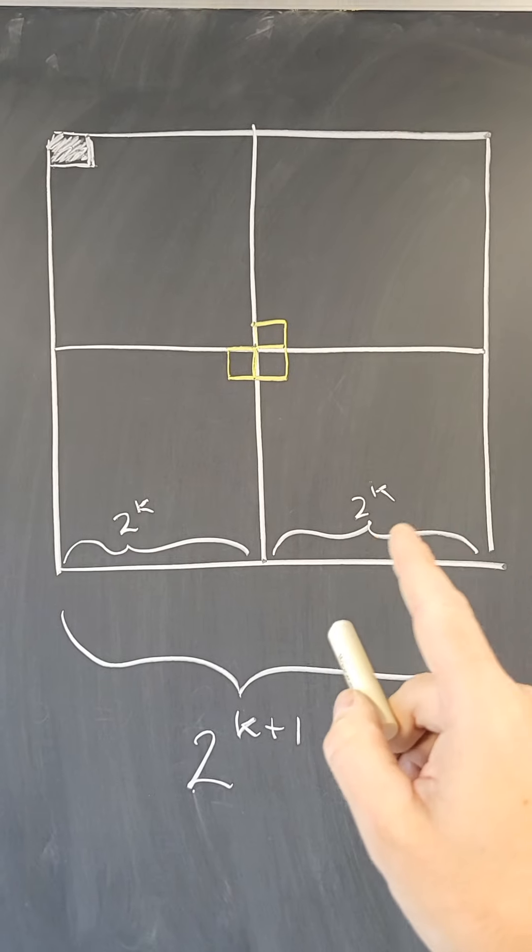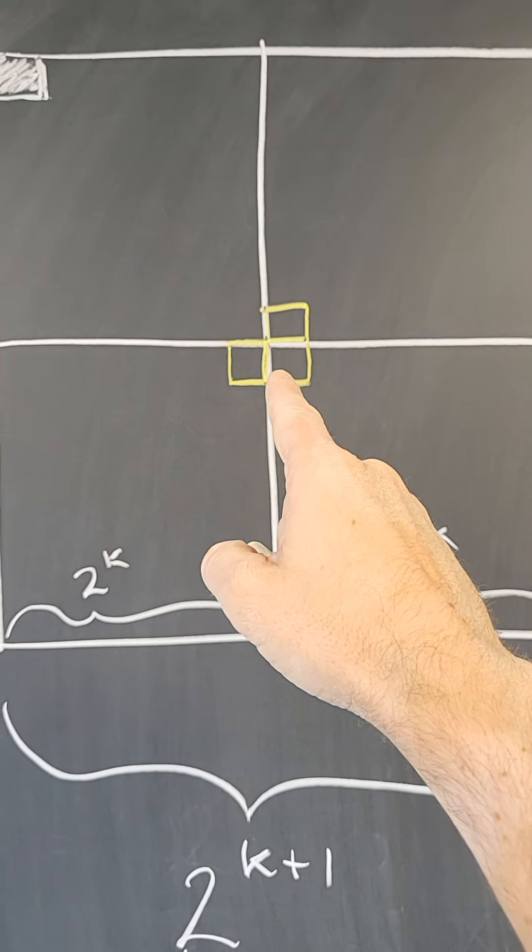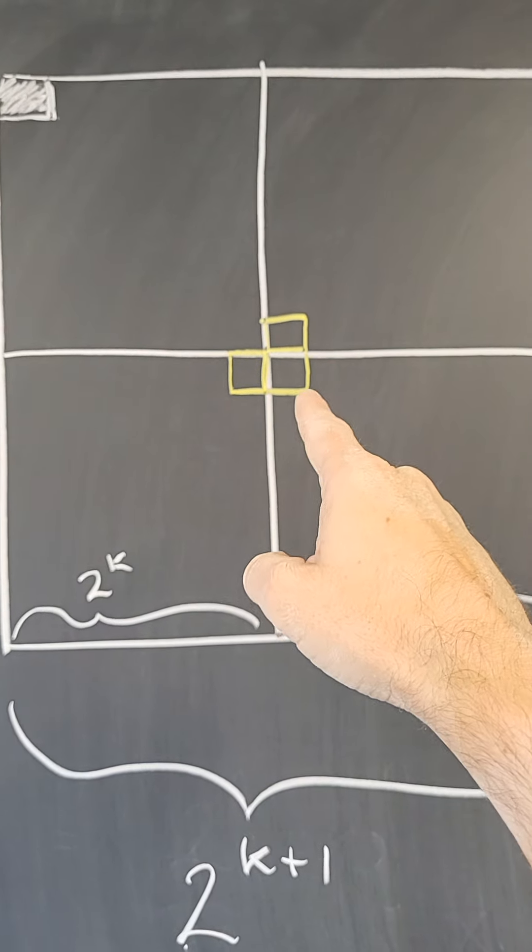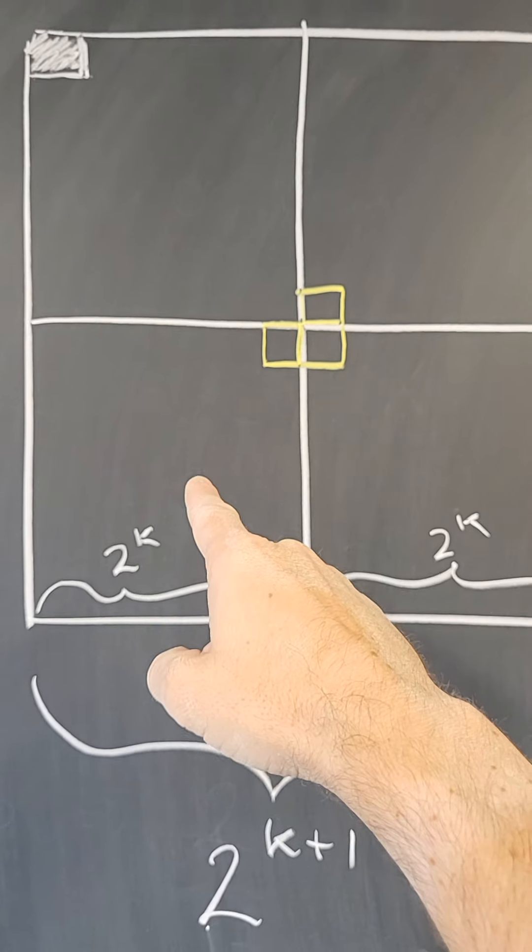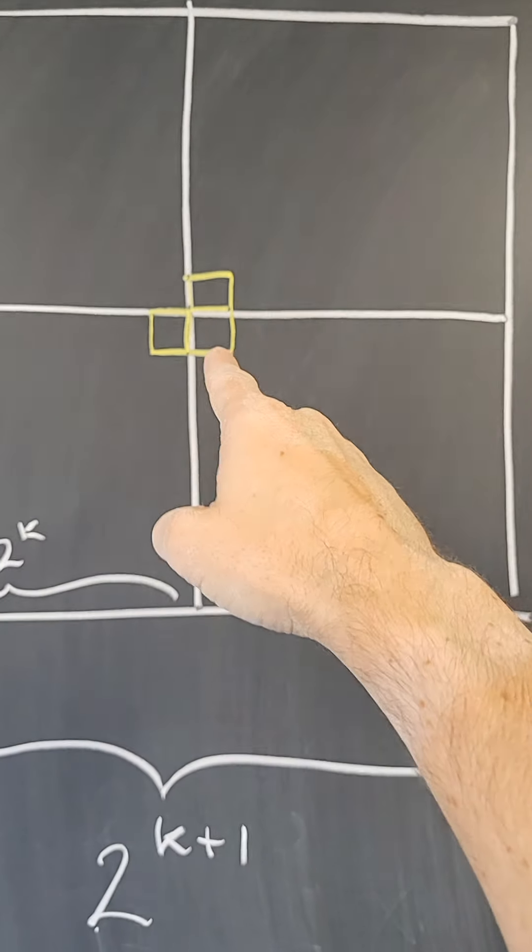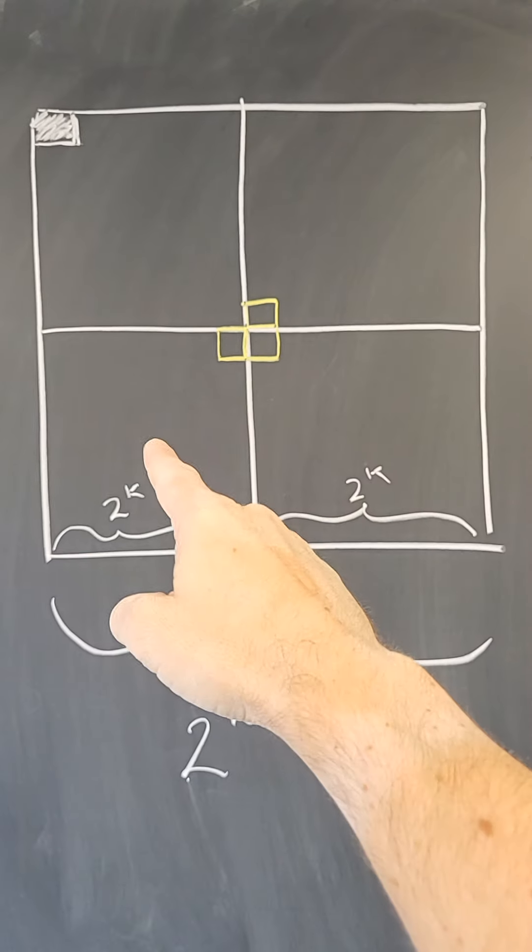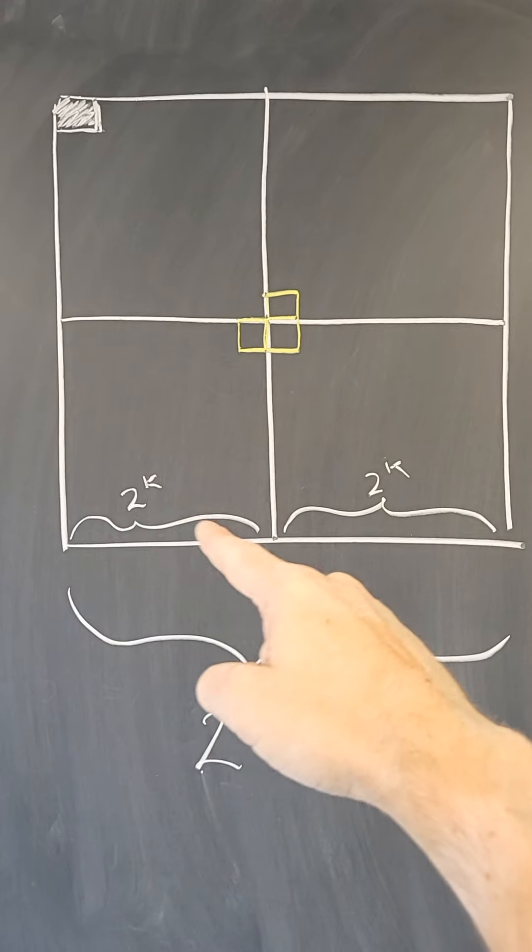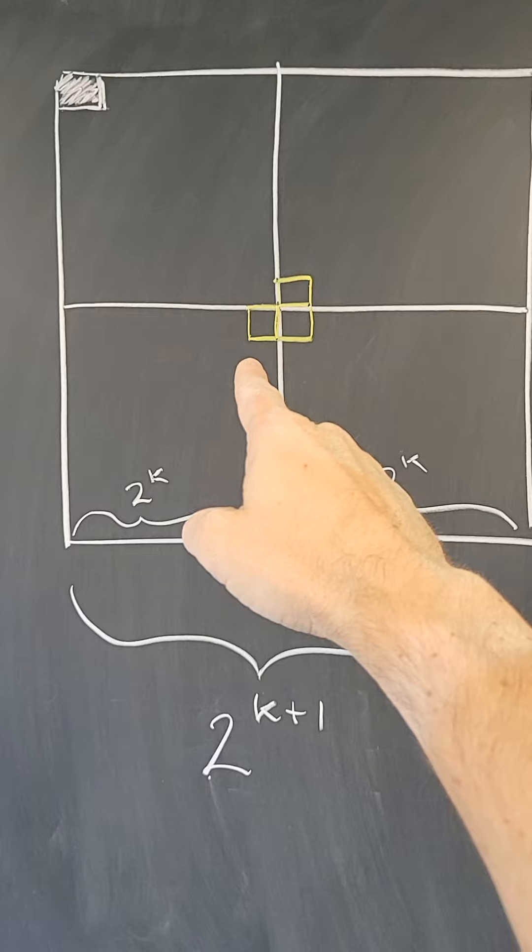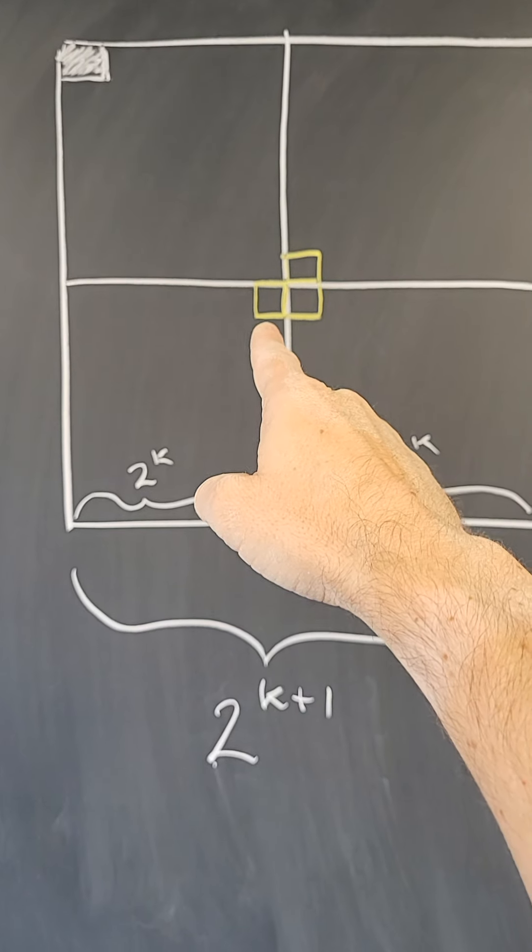And now what I'm going to do is put one of the tiles right in the middle in this position so that I'm removing one square from that, one square from this one, and one square from that one. So now each one of the squares here are 2 to the k by 2 to the k, and they are missing one square.